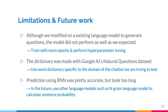Finally, our prediction using RNN was pretty accurate, but took too long in both the training and the testing phases. In the future, we wish to use other language models, such as an n-gram language model, to calculate sentence probability.